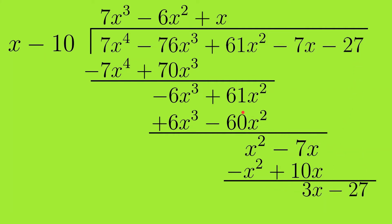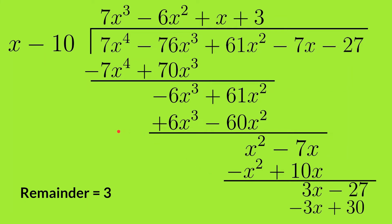We have 3x minus 27. Since x times 3 equals 3x, we write plus 3 in the quotient. Then 3 times (x minus 10) equals 3x minus 30. Switching signs gives minus 3x plus 30, and we are left with 3 as the remainder. Since the degree of 3 is less than the degree of x, we stop. The quotient is 7x³ minus 6x² plus x plus 3, and the remainder is 3.